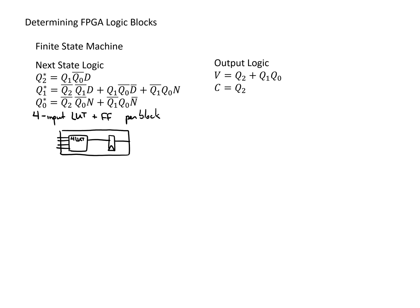We're going to start with the state-holding elements and next state logic, beginning with Q2. Looking at the equation for Q2, the next value of Q2 is dependent only on Q1, Q0, and D — so we need three inputs. A four-input lookup table can implement any logic function of four or fewer inputs, so with only three inputs we can cover this with a single lookup table. We attach Q1, Q0, and D to three of the inputs; the lookup table produces the next value of Q2, and the flip-flop holds the current value of Q2.